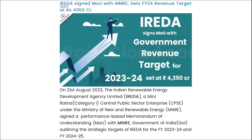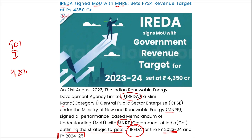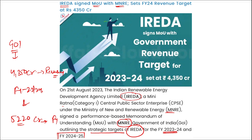IREDA has signed a memorandum of understanding with the Ministry of New and Renewable Energy. IREDA is a Mini-Ratna CPSE under the Ministry of New and Renewable Energy. This MOU outlines the strategic targets of IREDA for fiscal year 23-24 and fiscal year 24-25. The Government of India has set a target of achieving Rs. 4,350 crore in revenue from operations during FY23-24 and Rs. 5,220 crore for FY24-25.